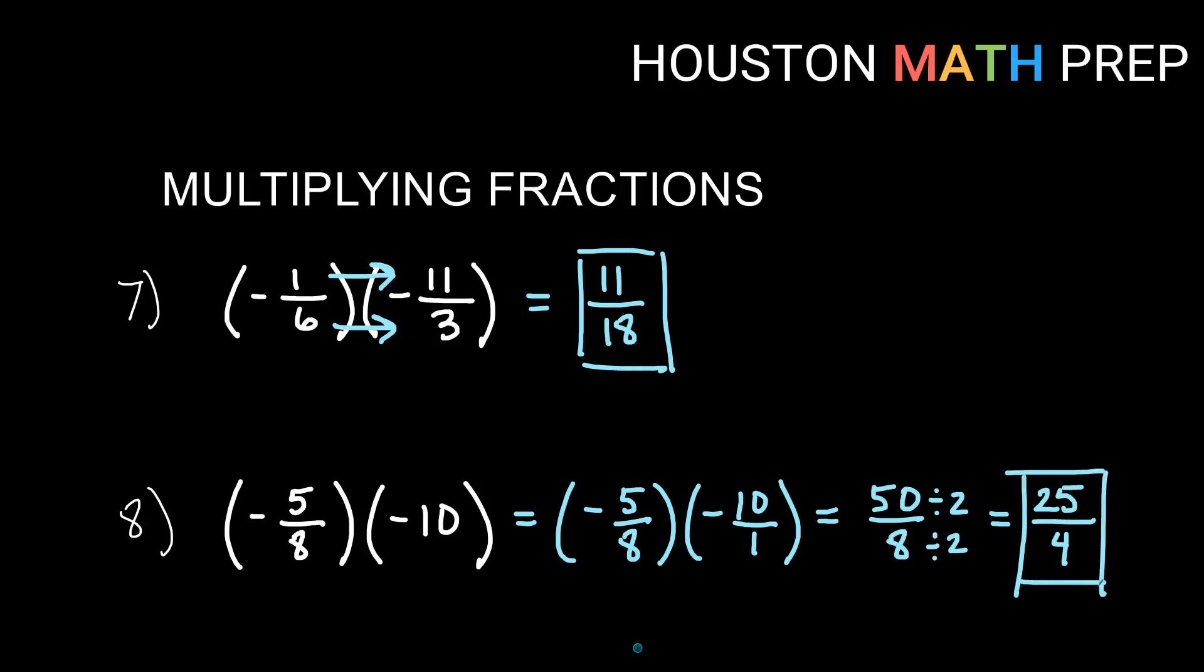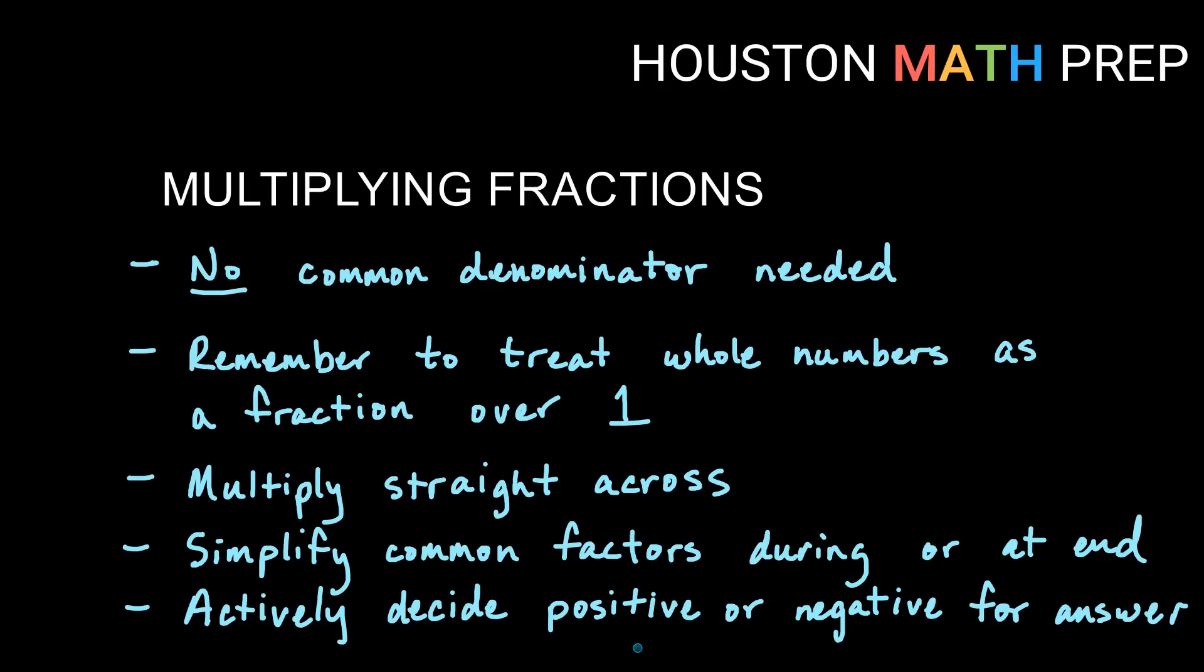Okay, so it's up to you. Reduce at the end. Reduce before you do the multiply. Either way, it should work out. Always check that final answer and make sure you're not getting something that can be reduced. We definitely want to simplify when we can. So for multiplying fractions, you don't need a common denominator like you do with add-subtract, which is good. That's less work on these.